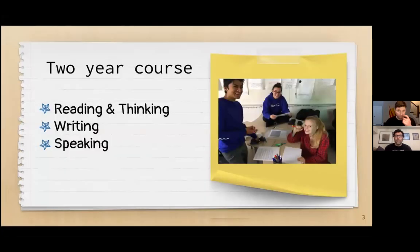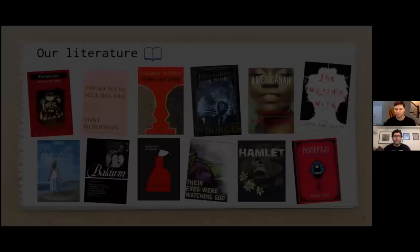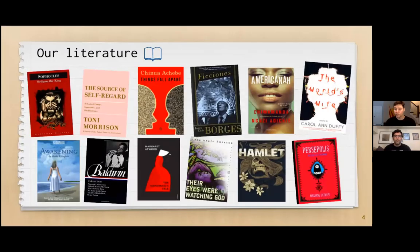In this presentation, we just want to give you all an overview for the course. The first thing to know is that this is a two-year course. It really focuses on three areas: reading and thinking, writing and speaking. Students read 13 texts over the course of two years, and these texts come from a variety of places, spaces, and time, a variety of cultures, and they're written in a variety of genres.